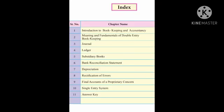As per the new syllabus of Maharashtra State Board, there are total 10 chapters: 1. Introduction to Bookkeeping and Accountancy, 2. Meaning and Fundamentals of Double Entry Bookkeeping System, 3. Journals, 4. Ledger, 5. Subsidiary Books, 6. Bank Reconciliation Statement, 7. Depreciation, 8. Rectification of Errors, 9. Final Account of Proprietary Concern, and 10. Single Entry System.